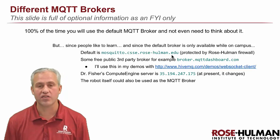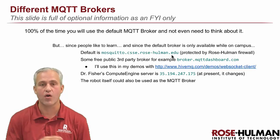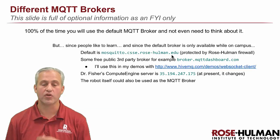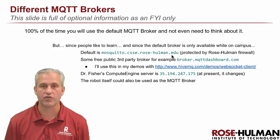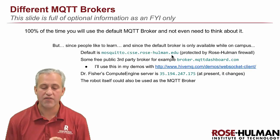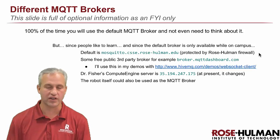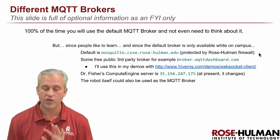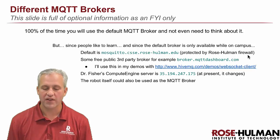So long as you're connected to the Rose-Hulman network, you'll be able to use that server for your MQTT messages. If you are off campus, that server is going to stop working — it's firewalled. If you take your robot off campus for some reason, you won't be able to reach that server. In that case, you'd have to connect to a different server.